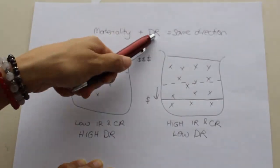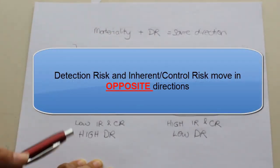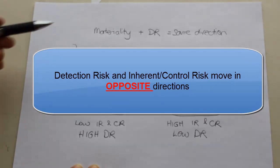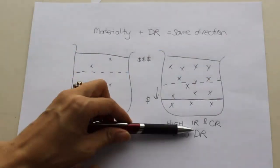Whereas my detection risk and my inherent and control risk move in opposite or inverse directions. So this is the reason why when there's higher levels of risk, we drop materiality down to allow us to detect more material misstatements.